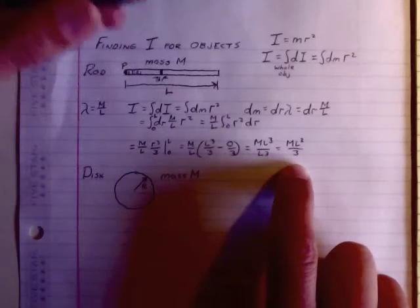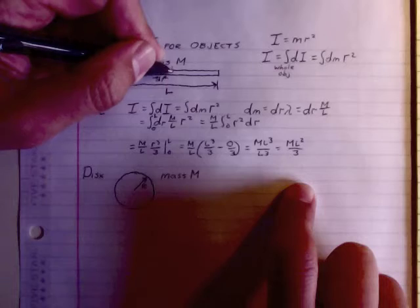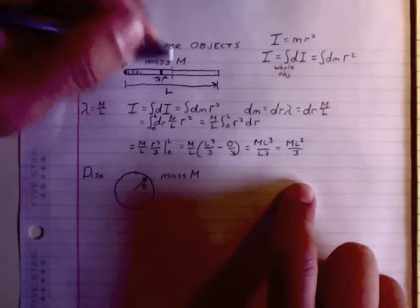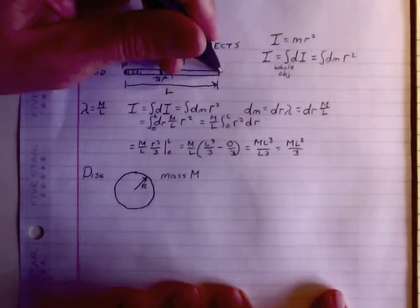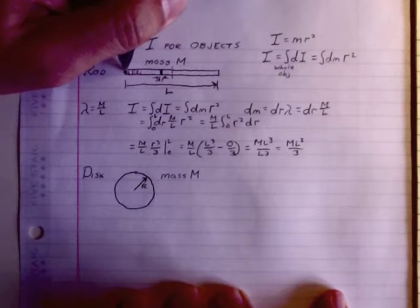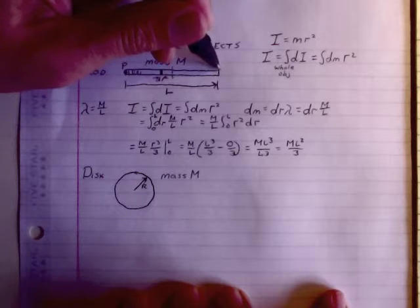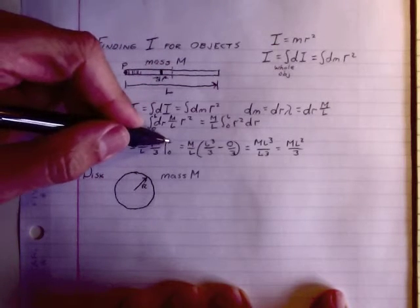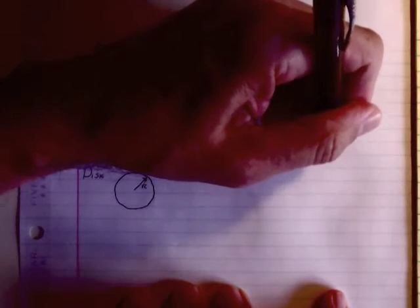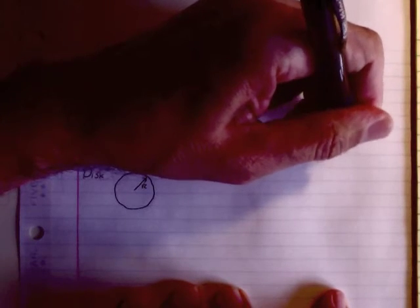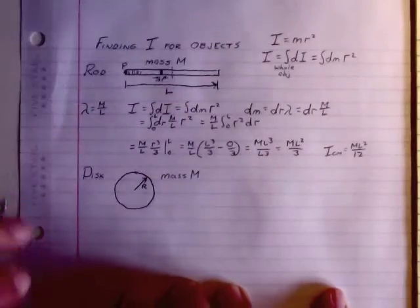As an exercise, if you wanted to find the rotational inertia around the center of mass, you would integrate from −l/2 to l/2, because each end is l/2 away from the axis of rotation. When you do that, I center of mass ends up being ml²/12.